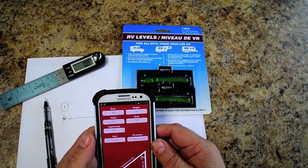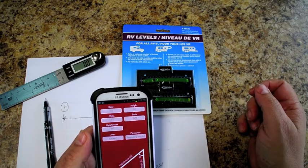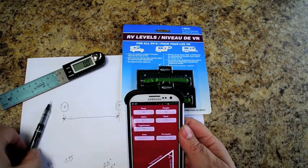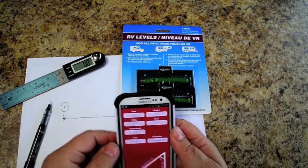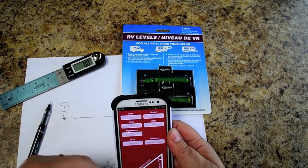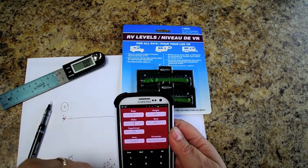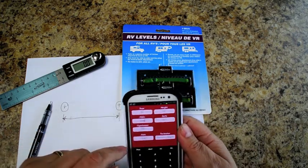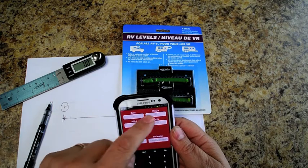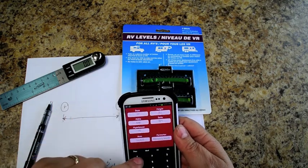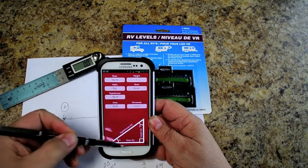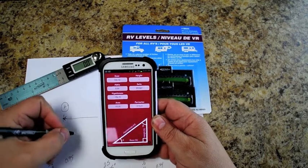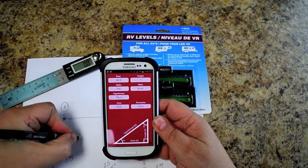Okay, what I have here is just a little calculator for trig functions on my phone. And what we want to do is we want to put in for the alpha 0.54 degrees. And then for the height, we want to do one inch. The base is what we want to find, and the base is 106.1, so 106.1 inches.